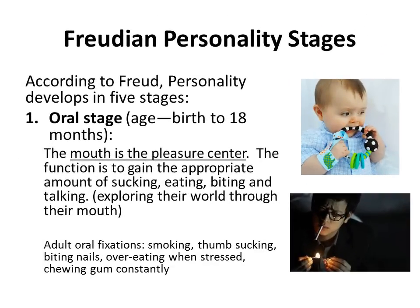Now let's look at personality stages according to Freud. He believed our personalities are fixed by the time we are 18, so he divided the period from zero to 18 into five stages. The first stage is the oral stage, occurring from birth to 18 months. At this time the mouth is the pleasure center — the function is to gain the appropriate amount of sucking, eating, biting, and talking. Babies explore the world through their mouth; if you hand a baby something, the first thing they do is put it in their mouth.